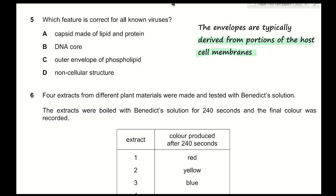Question 5: which feature is common to all known viruses? A — capsid made of lipid and protein — is incorrect because not all viruses have lipid in their capsid. B — DNA core — is incorrect because some viruses have RNA (e.g., retroviruses). C — outer envelope of phospholipid — is incorrect because the envelope is derived from the host cell membrane and varies. D — non-cellular structure — is correct because viruses are not cells. The answer is D.